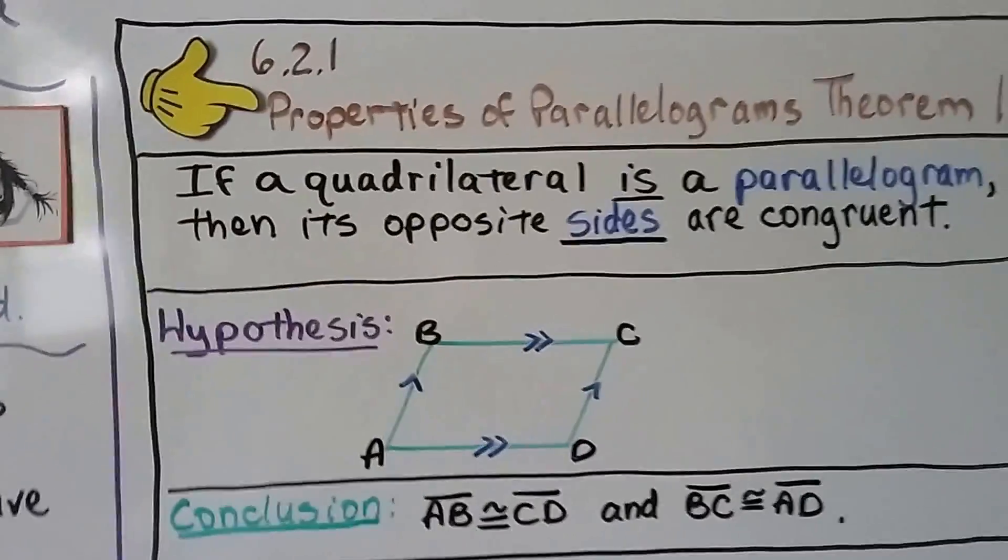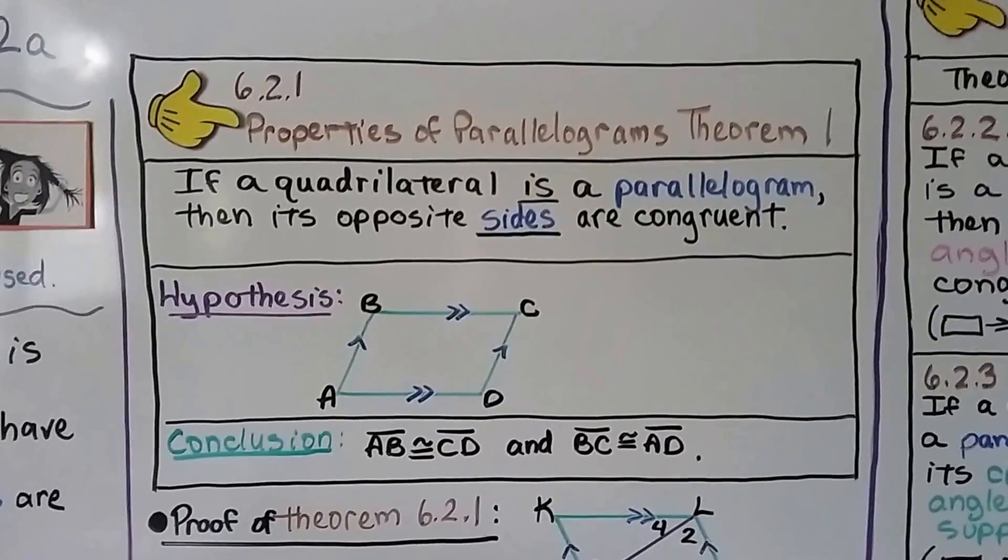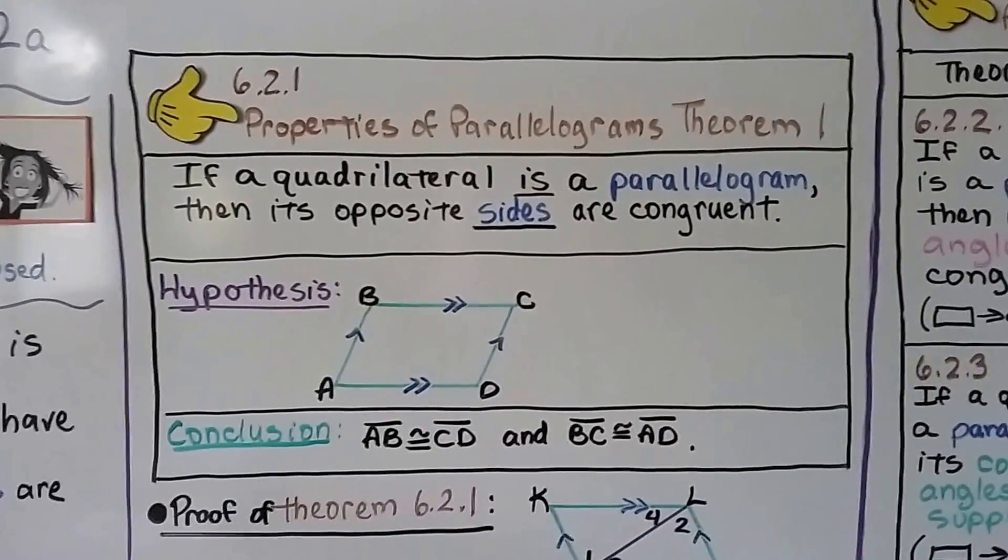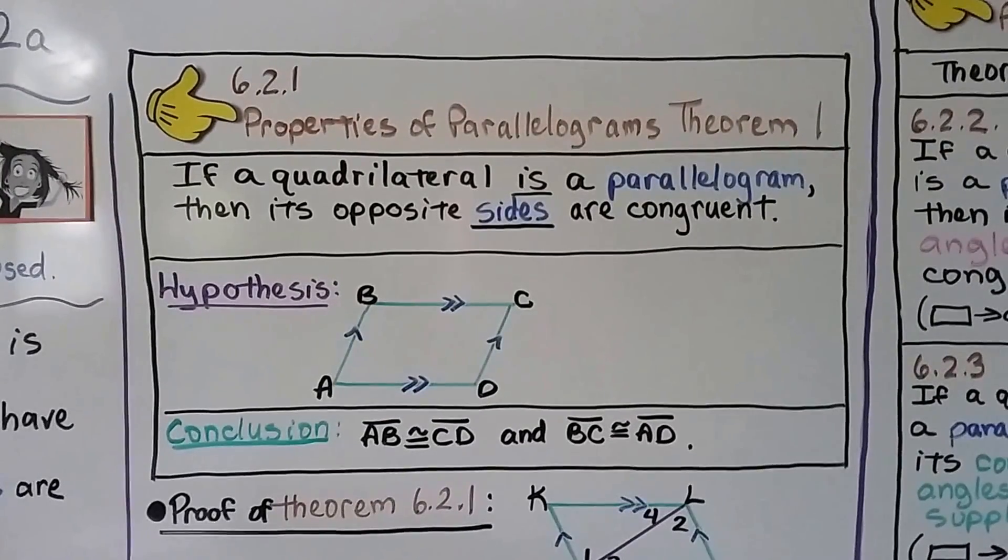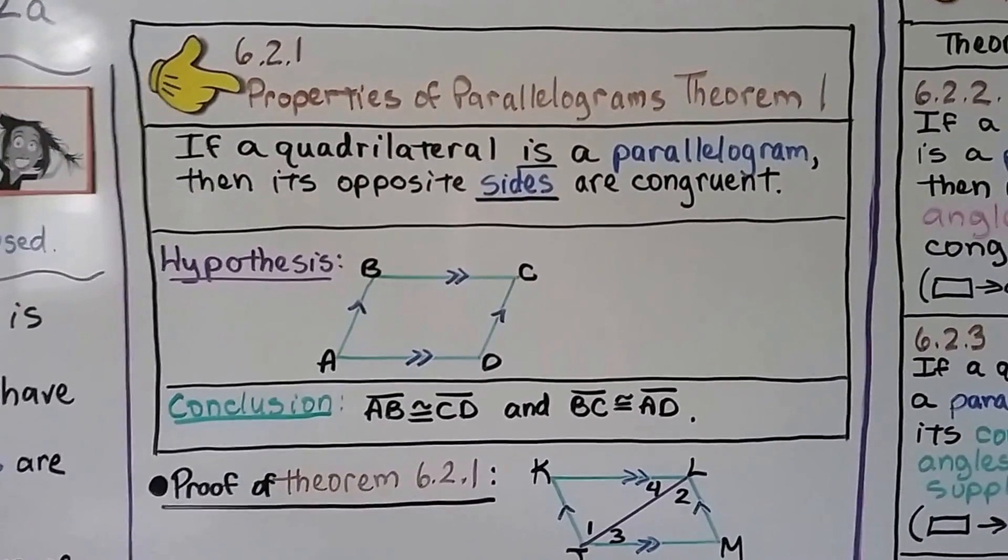So here's our first theorem for properties of parallelograms. If a quadrilateral is a parallelogram, then its opposite sides are congruent. So if this is a parallelogram, this side is congruent to this one, and this one's congruent to that one.